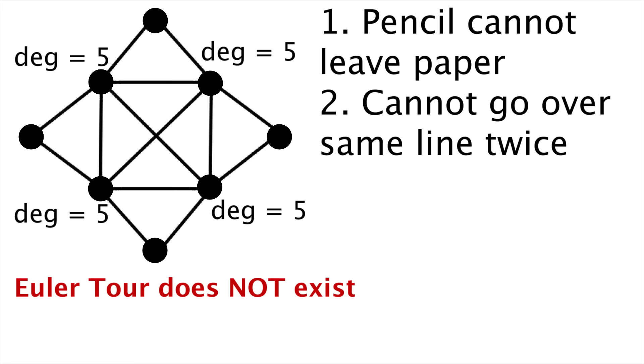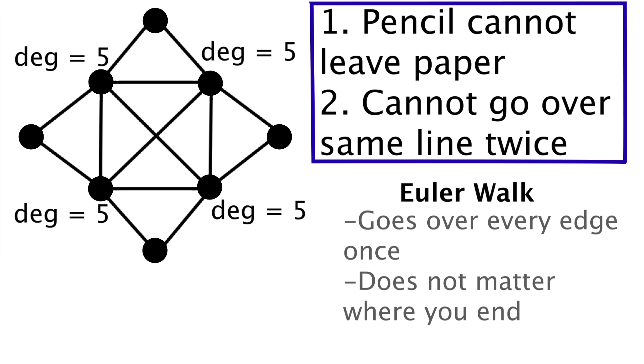But we aren't in the clear yet. Neither condition said that we had to end where we started. We can end wherever we want. We just can't go over the same edge twice. Now this is called an Euler walk. It's the same as an Euler tour, but you can end wherever you want.